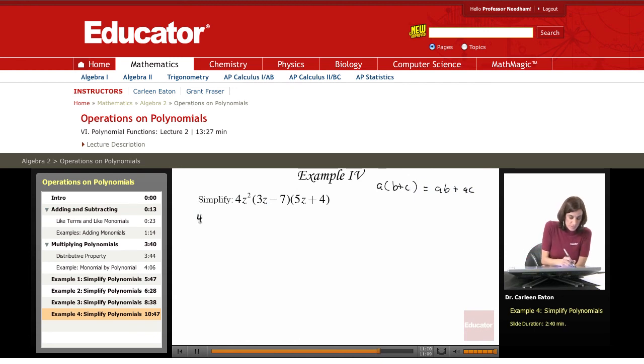I'm going to start out with this. Keeping the 4z squared, and now multiplying out using the distributive property. And recall, with two binomials, you can use the FOIL method. So multiplying the first terms is going to give me 15z squared.